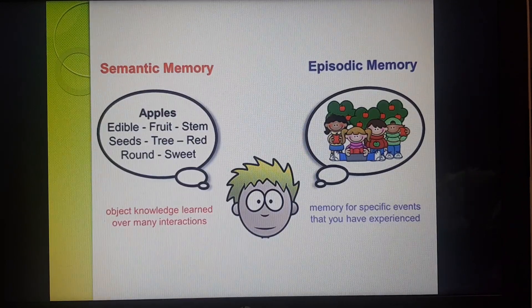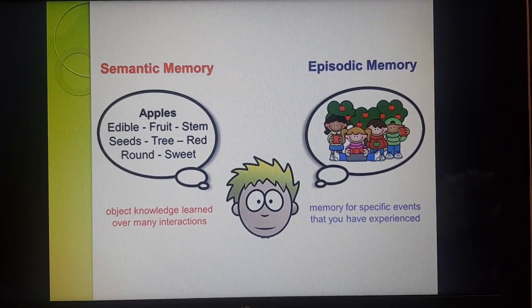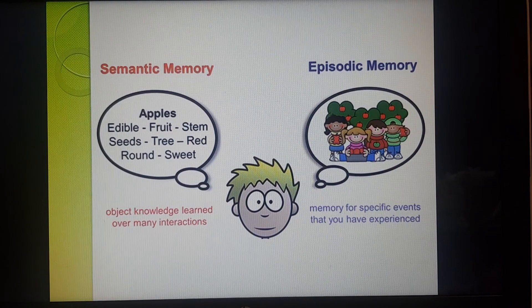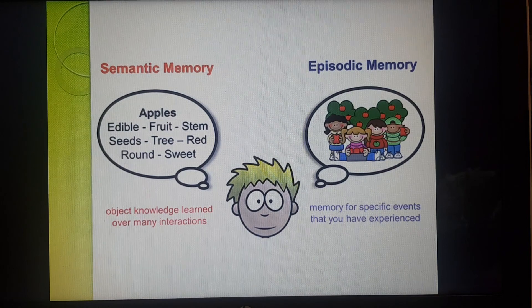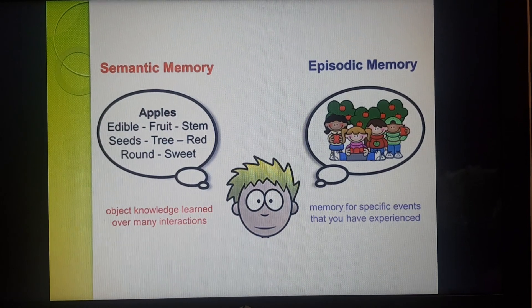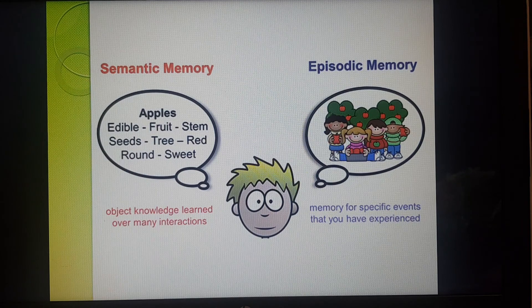To summarize, this diagram shows that semantic memory is information that we have learned and gained from our interactions — through school and our interactions with others. And episodic memory is our memory of specific personal events.